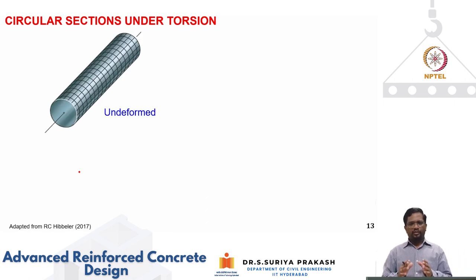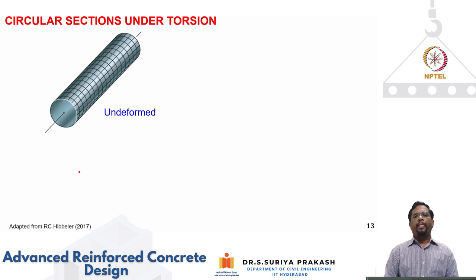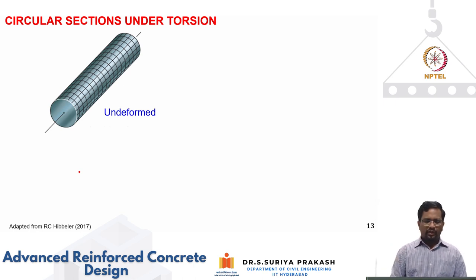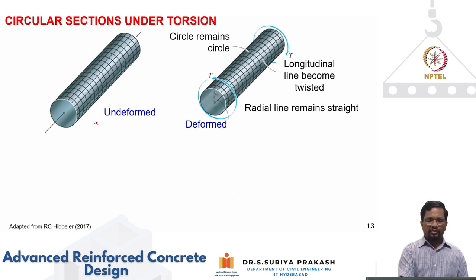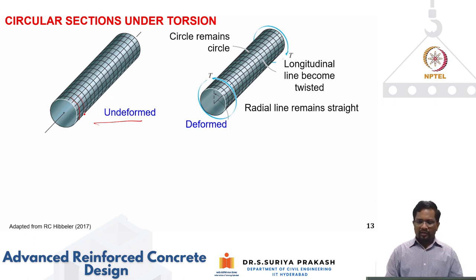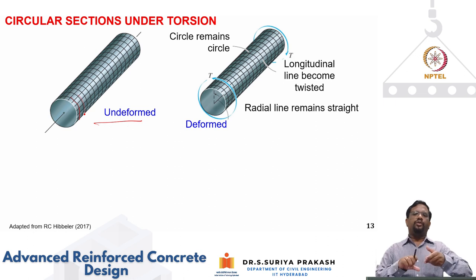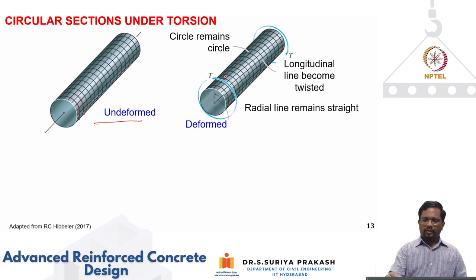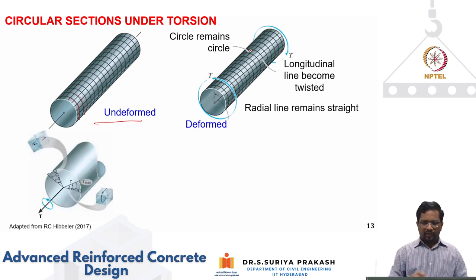Looking at how different sections behave under torsion: for a circular bar discretized into longitudinal and radial lines, when undergoing twisting, the circular cross-sectional lines simply rotate while the longitudinal lines get twisted. However, the radial lines remain straight — similar to plane sections remaining plane in bending. This is how the circular section deforms under torsion.